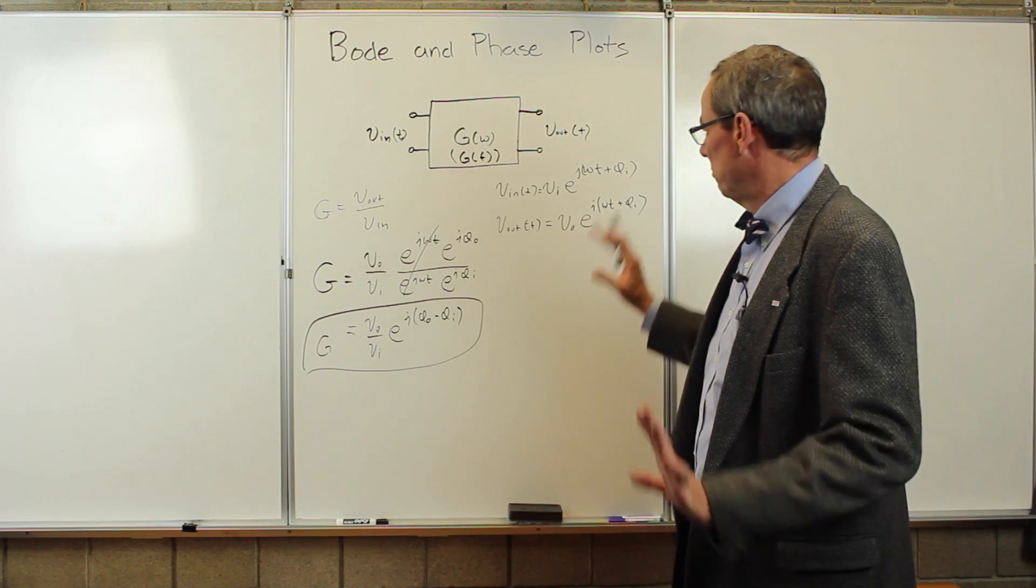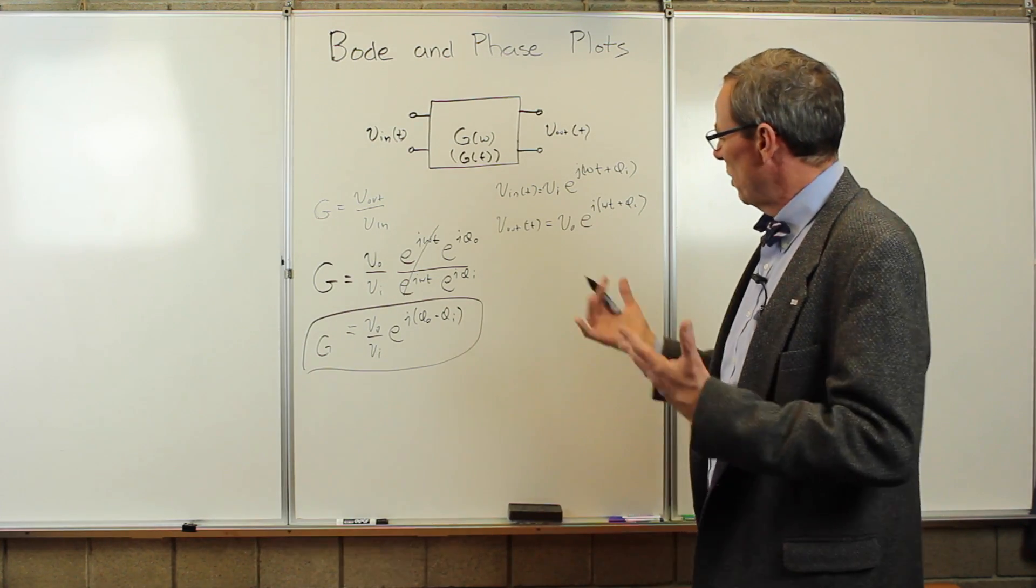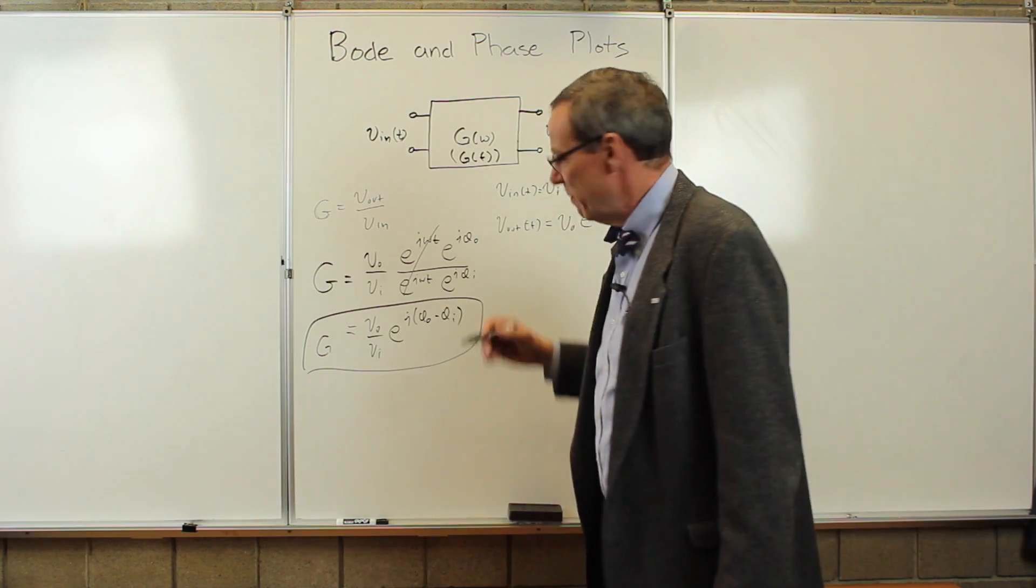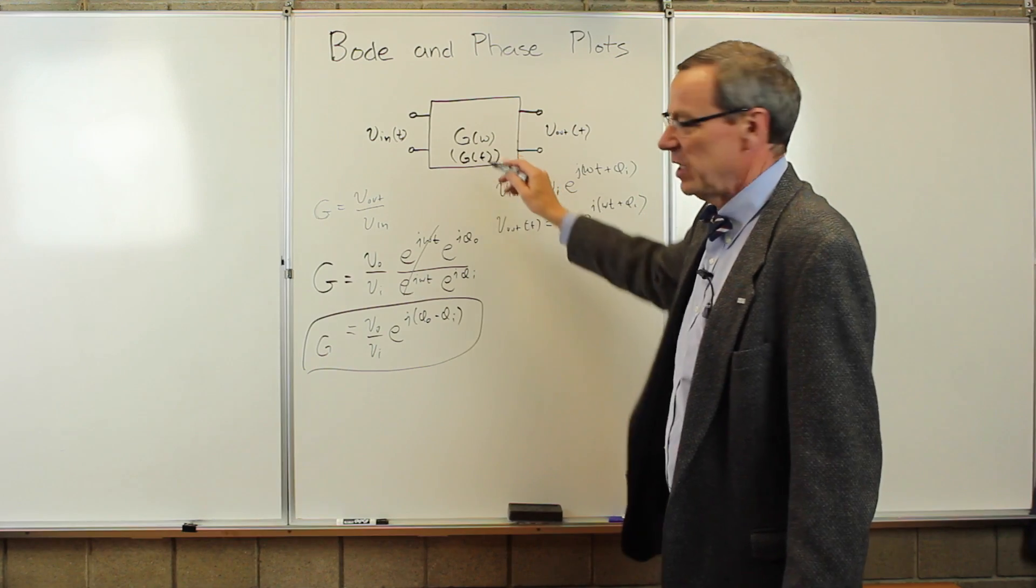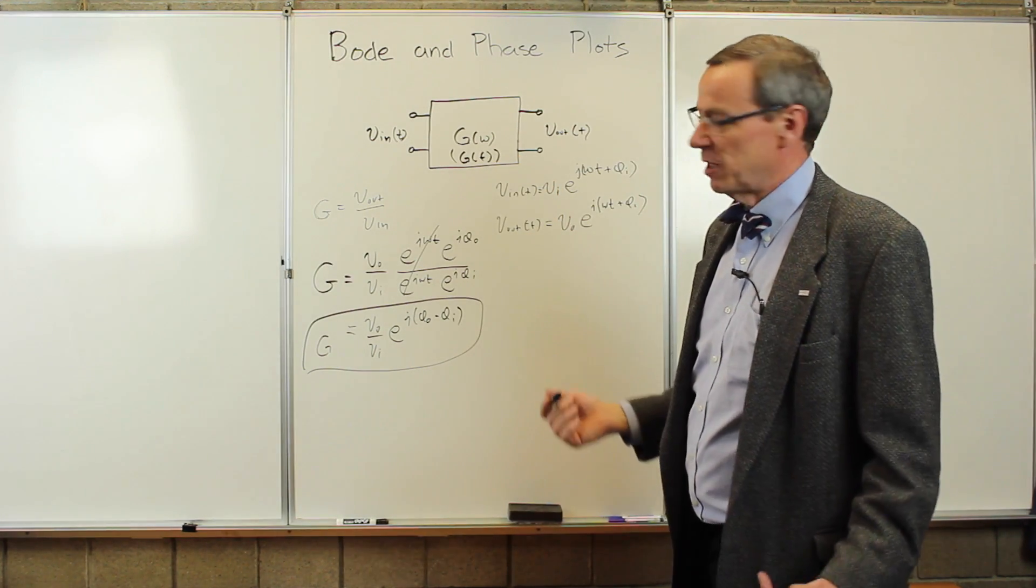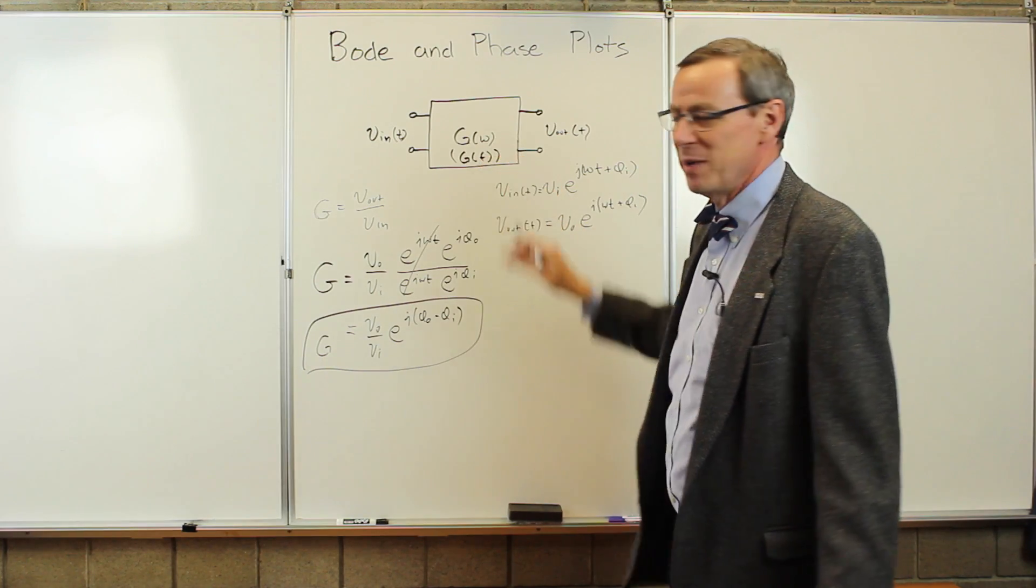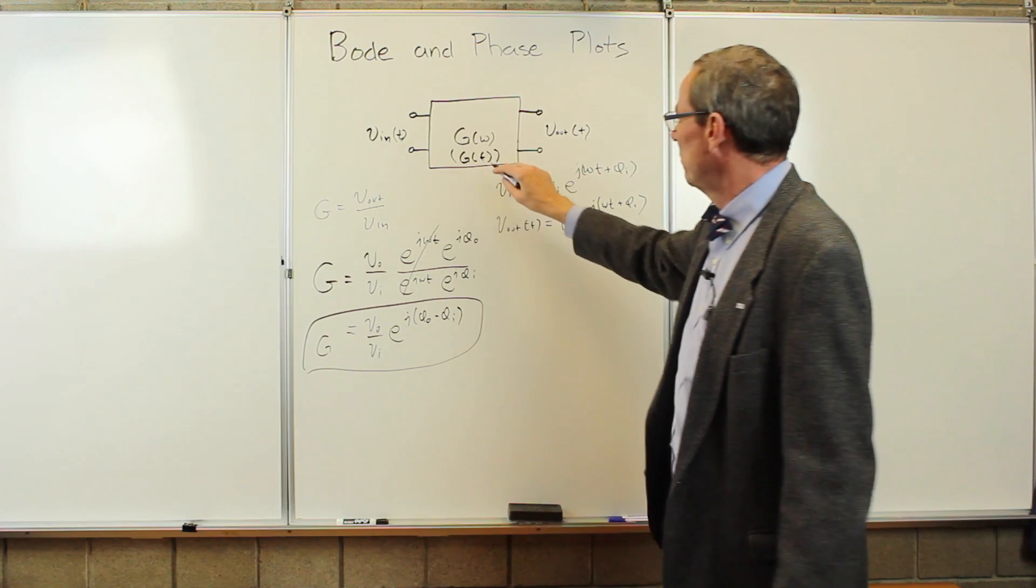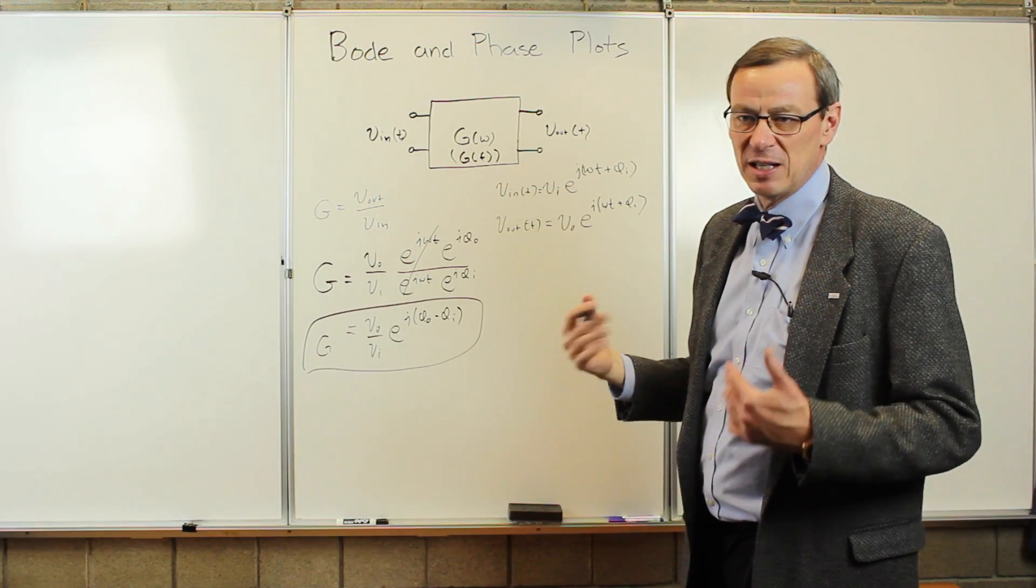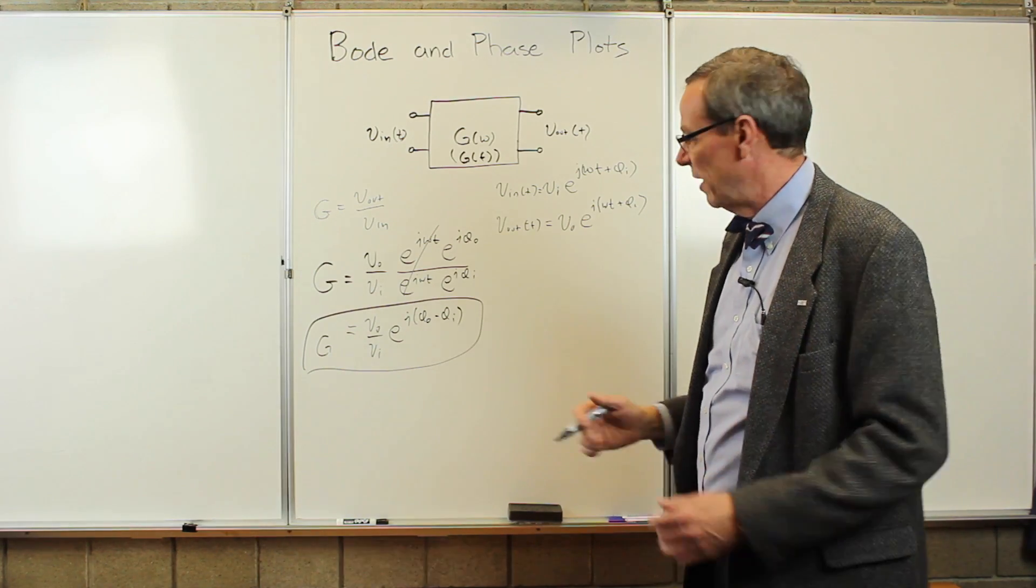And that can be a function of the frequency. It can depend on the frequency. So what we want to do in the lab is go and measure that gain as a function of frequency. And the frequency can run from something very small, like a hertz, up to something very large, megahertz or gigahertz. So it's going to run over many orders of magnitude. So instead of plotting things against the frequency, we generally plot them on a logarithmic scale of the frequency, so that the details are not lost.